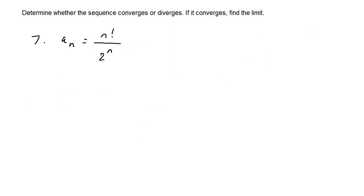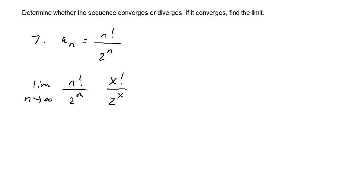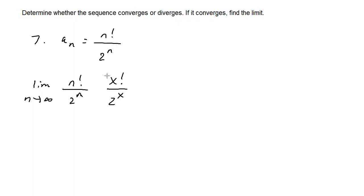For number seven, a_sub_n equals n factorial over 2^n. To determine which grows faster, consider that 10 factorial is in the millions while 2 to the tenth is only 1,024. Graphing x factorial versus 2^x confirms that factorial grows much faster, making the fraction top heavy. Therefore the limit is infinity and the sequence diverges.